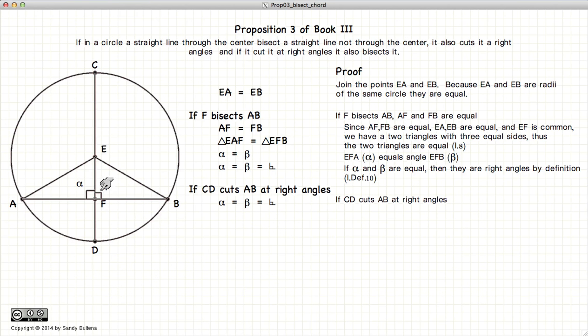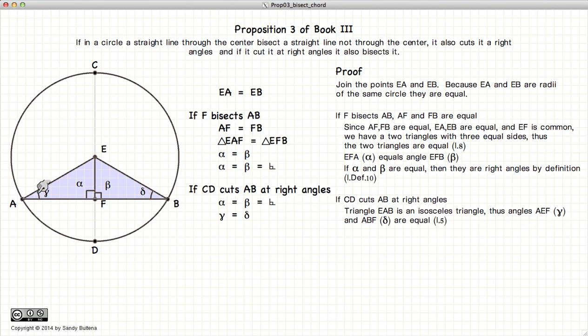Now, let's look at the inverse of that. We start with the assumption that alpha and beta are right angles. Now, if we look at this purple triangle, since EA and EB are equal, it's an isosceles triangle, which gives us that gamma and delta are equal, according to Proposition 5.